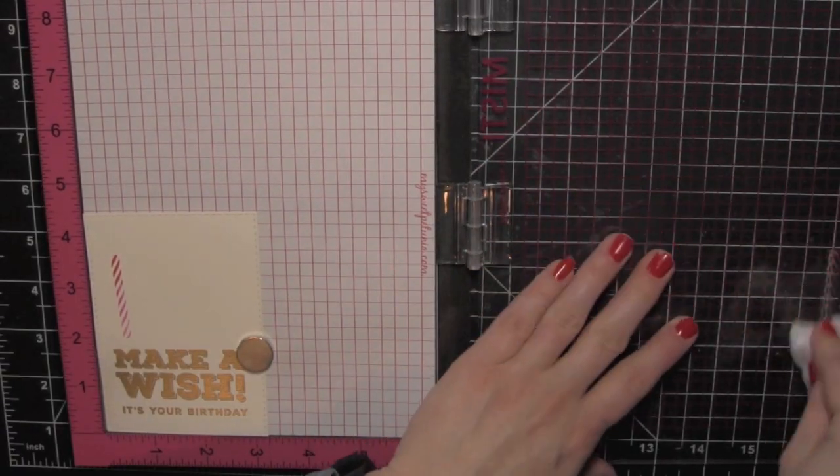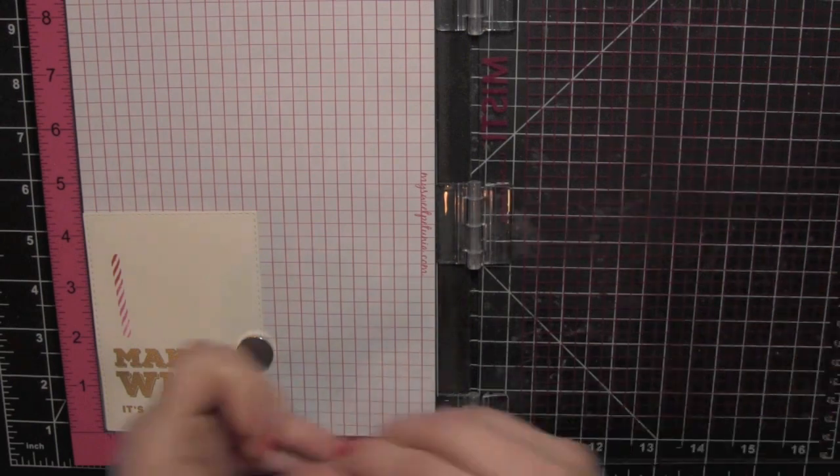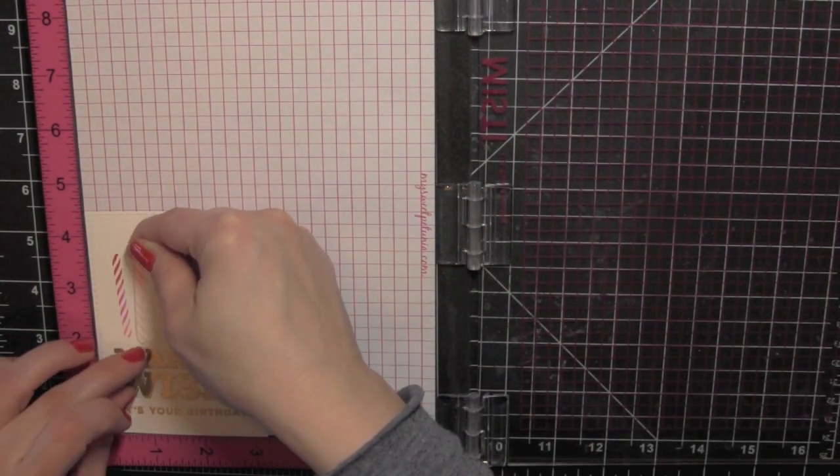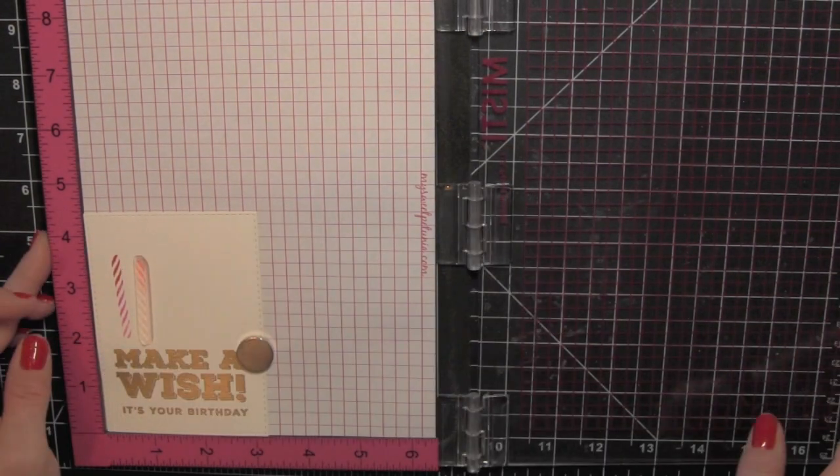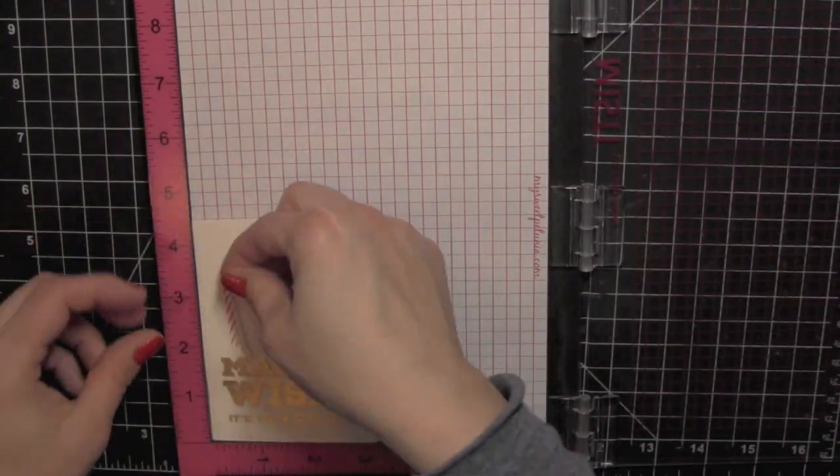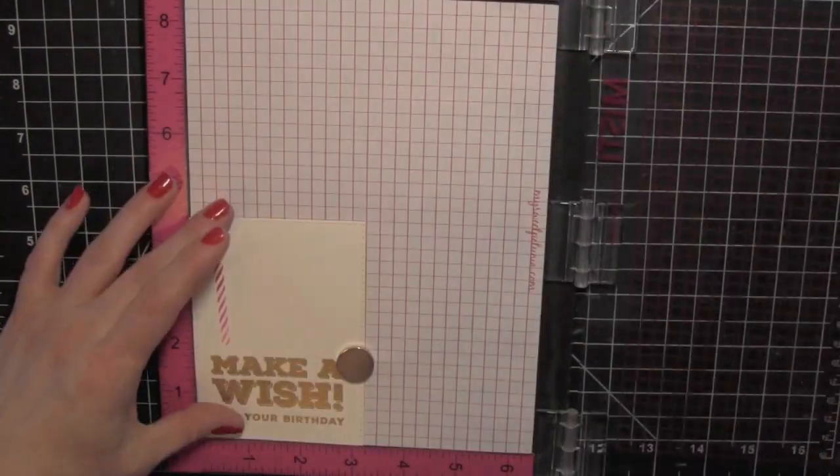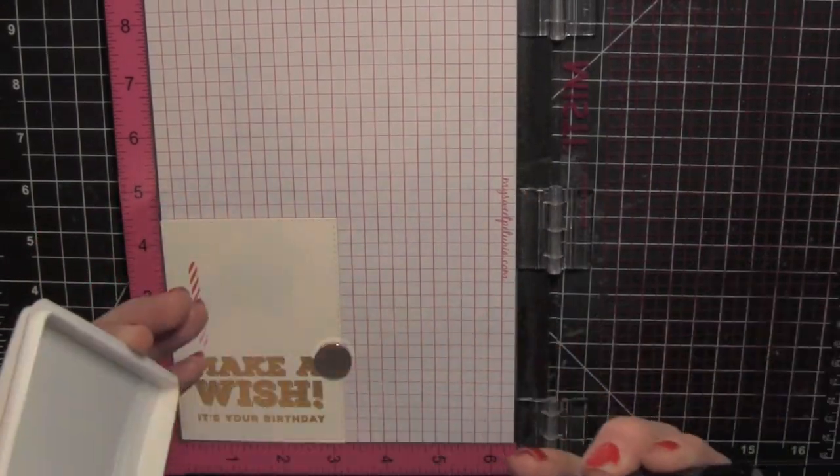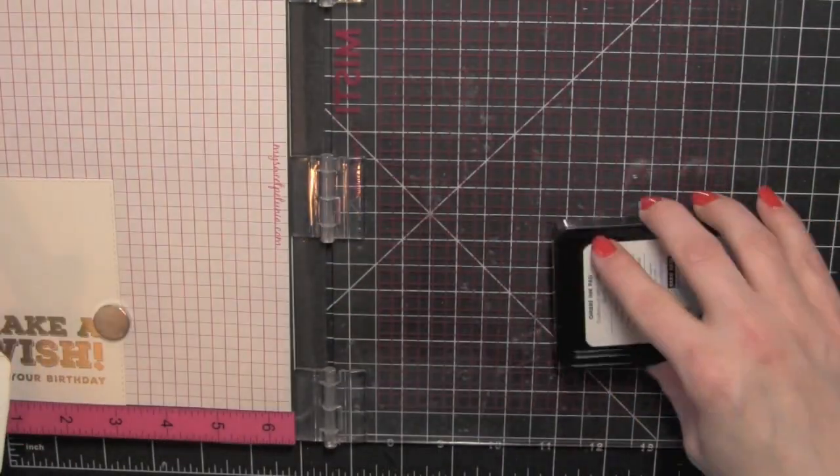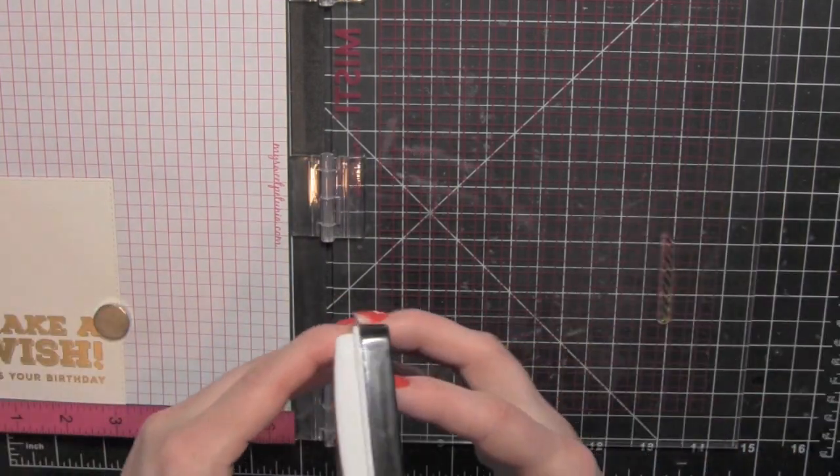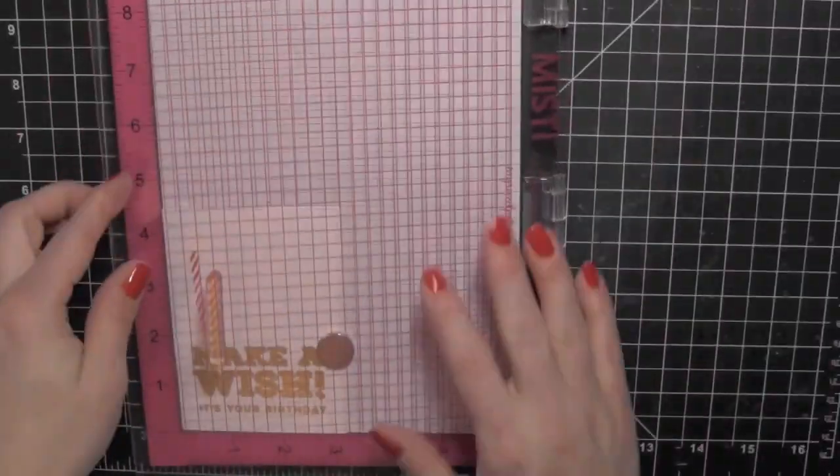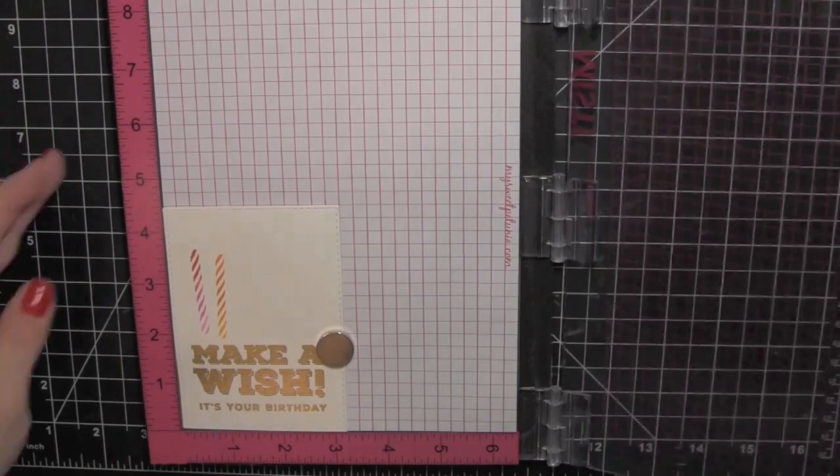Now I am also going to use the Misti stamping tool to stamp the birthday candles from this same stamp set. I'm using the brand new Hero Arts ombre inks in the pink color, and then the yellow orange, and also the mint.